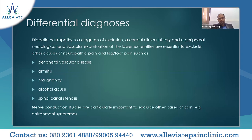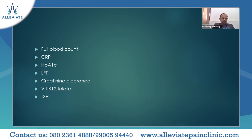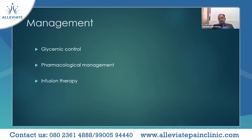Generally, investigations include full blood count, CRP for inflammation, HbA1c to assess glycemic control and response to therapy, liver function tests, renal clearance, B12 and folate to rule out deficiencies, and thyroid stimulating hormone tests. These support the clinical diagnosis and help monitor treatment.